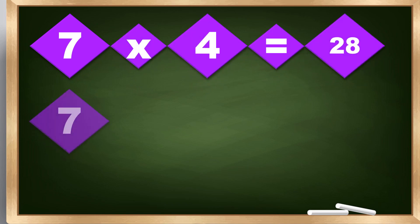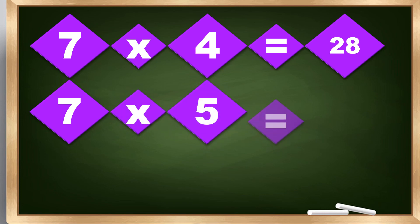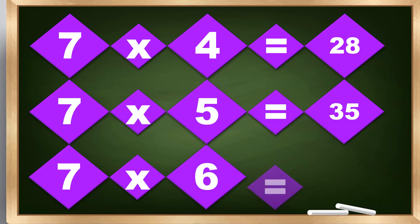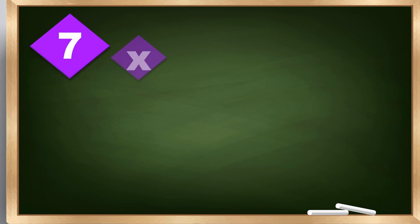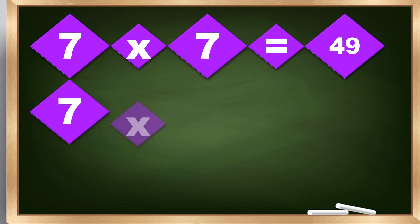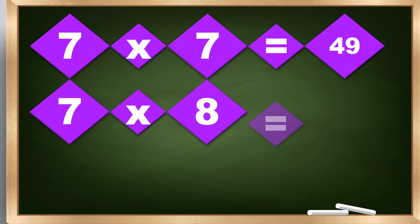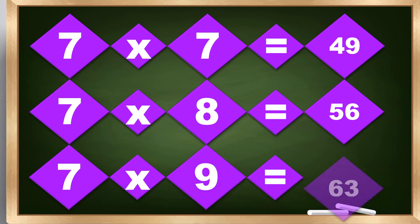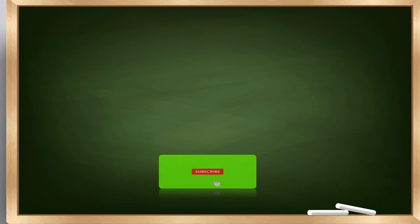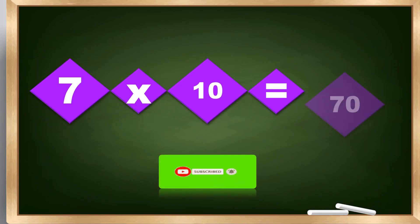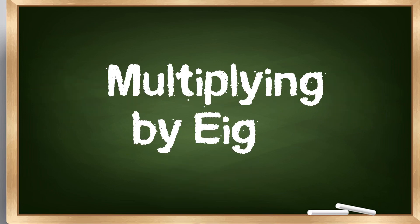Multiplying by 7. 7 times 5 equals 35. 7 times 6 equals 42. 7 times 7 equals 49. 7 times 8 equals 56. 7 times 9 equals 63. 7 times 10 equals 70. Multiplying by 8.